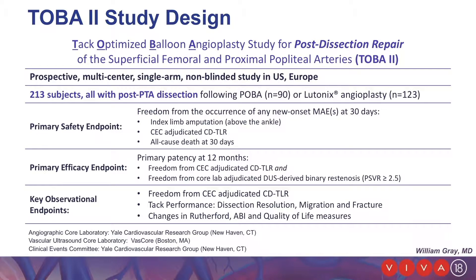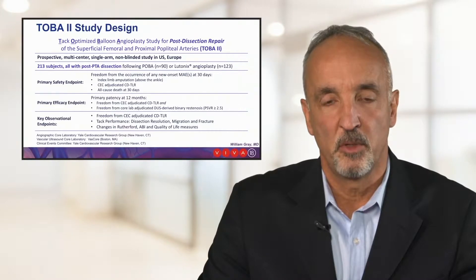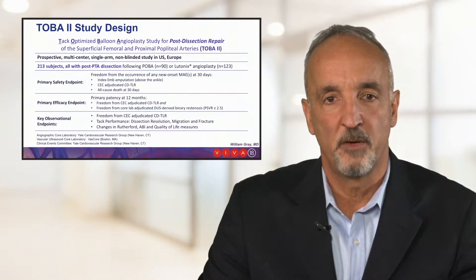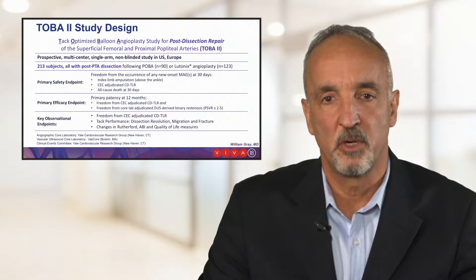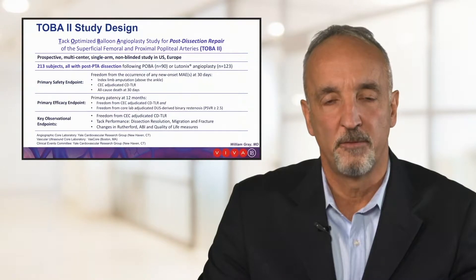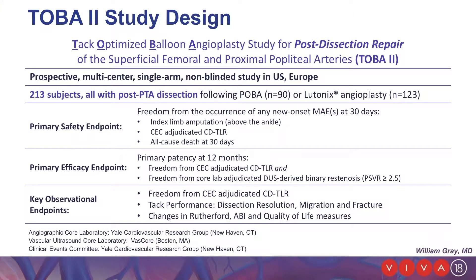The primary safety endpoint is freedom from occurrence of any new-onset MAE at 30 days, including index limb amputation, CEC-adjudicated TLR, or all-cause death. Primary efficacy endpoints include primary patency at 12 months, represented by freedom from CEC-adjudicated clinically-driven TLR, and freedom from core lab-adjudicated Doppler ultrasound-derived binary stenosis, as defined by a PSVR of greater than or equal to 2.5. Key observational endpoints include freedom from CEC-adjudicated clinically-driven TLR, TAC performance including dissection resolution, migration, and fracture, and changes in Rutherford classification, ABI, and quality-of-life measures.